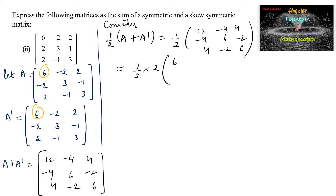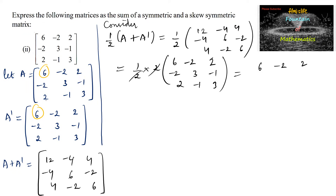Taking 2 as common, we get [6,-2,2; -2,3,-1; 2,-1,3]. So 1/2 times of A plus A transpose is the matrix [6,-2,2; -2,3,-1; 2,-1,3].